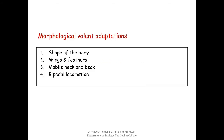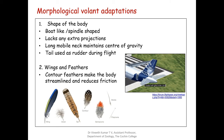Moving on to the morphological or volant adaptations, these are mainly of four types: the shape of the body, the wings and feathers, mobile neck and beak, and their bipedal locomotion. These are the morphological adaptations that have enabled birds the ability to fly.